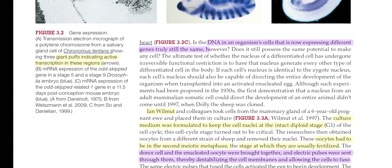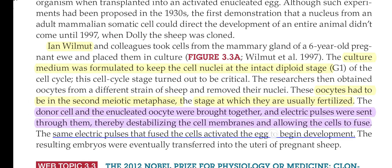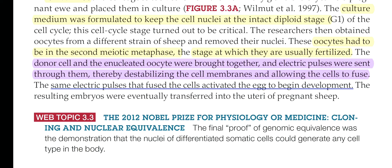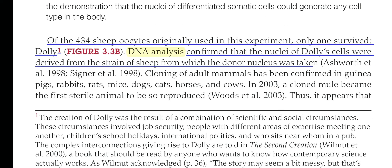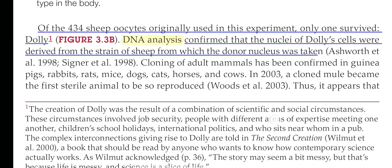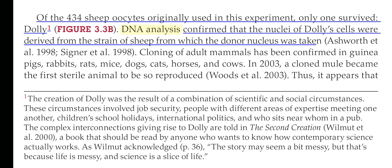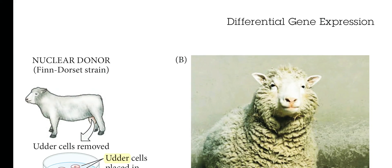The most wonderful experiment was done by Ian Wilmut and colleagues, who used a cloning technique to produce Dolly. He used about 432 oocytes and only one survived — that was Dolly. You can imagine how critical the management of all those steps was. This experiment successfully proved genomic equivalence. The nuclear donor was the Finn Dorset sheep, whose nucleus was transplanted into the enucleated egg of a Scottish Blackface oocyte donor.